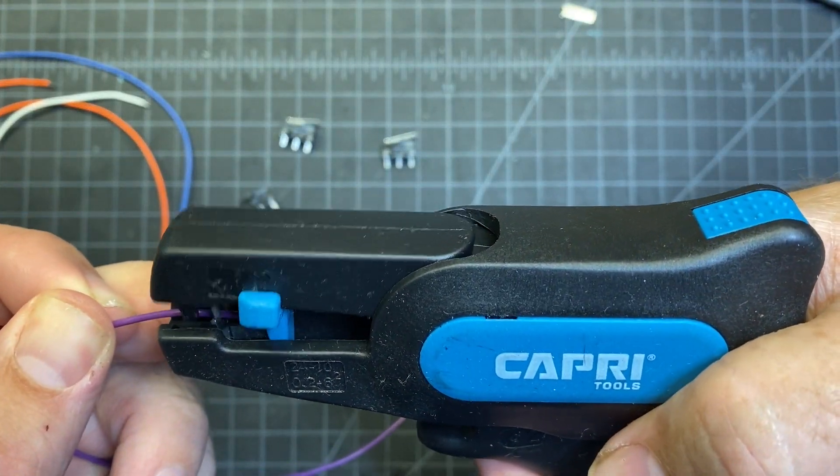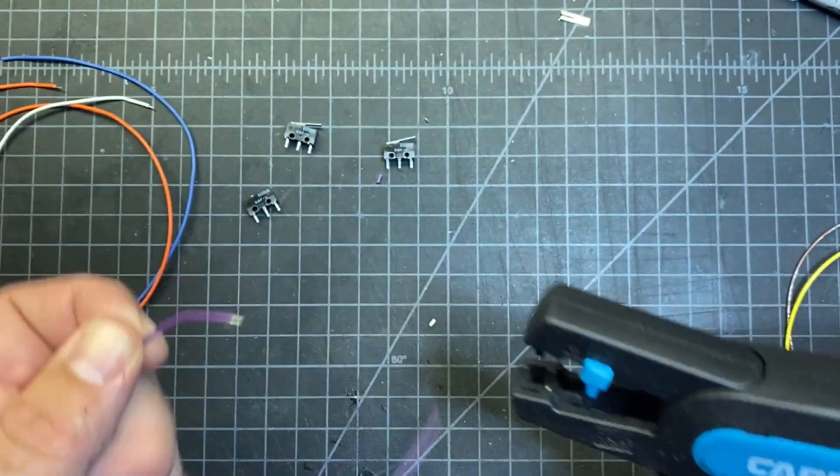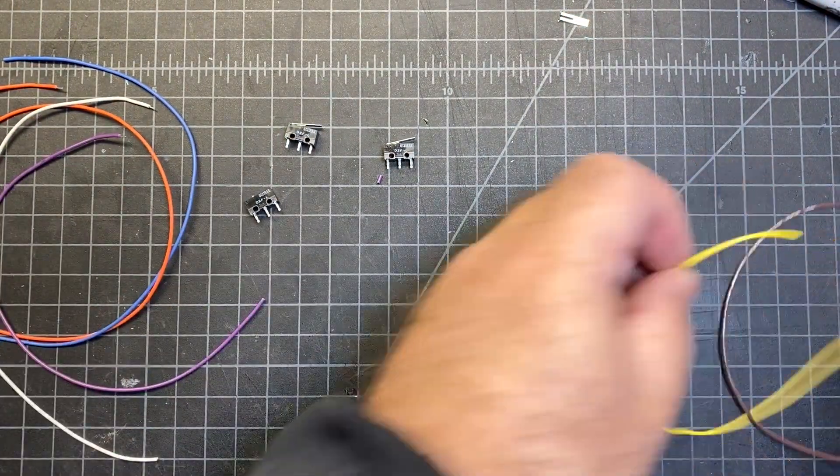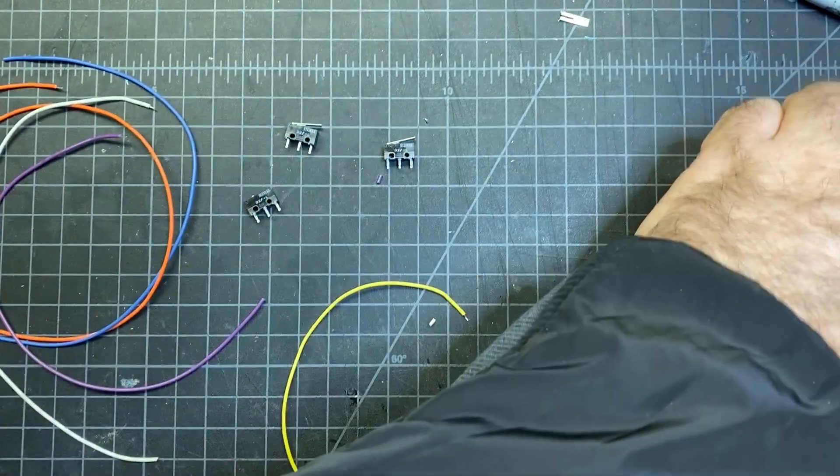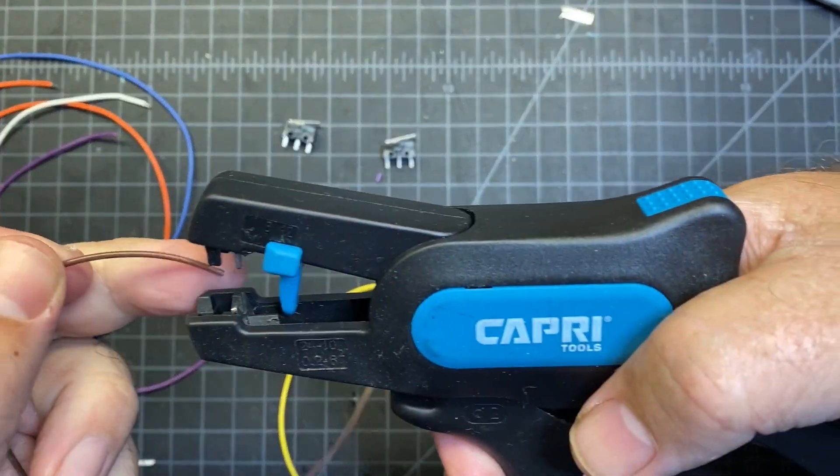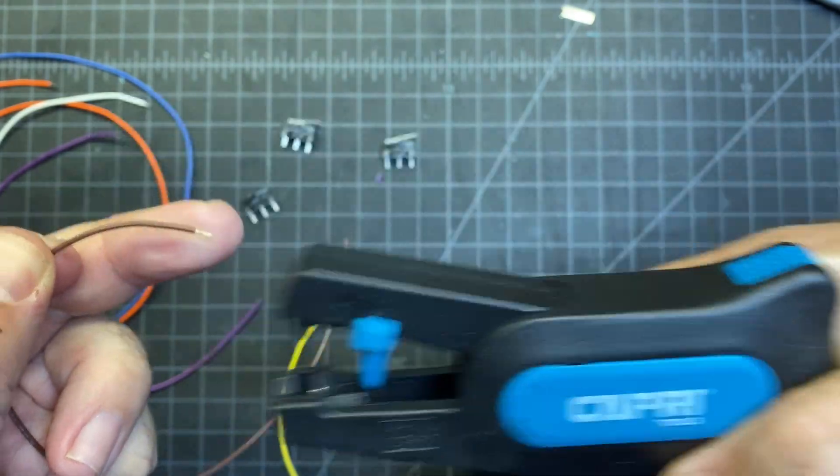This is a nice stripper tool. There are other ones, but I do a lot of soldering. So I tend to do a lot of this type of work. So I like to have the good tools. You can buy this on Amazon for, I don't know, 20 bucks.